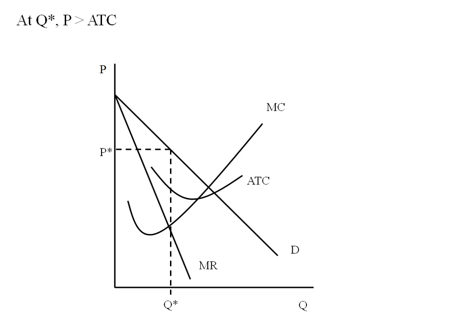Now since we're looking for profits, we go back to Q star, go up to ATC and over. In this case, price exceeds average total cost, so that area represents the firm's profits. Another way of thinking about that is price minus ATC times Q star is a positive number.